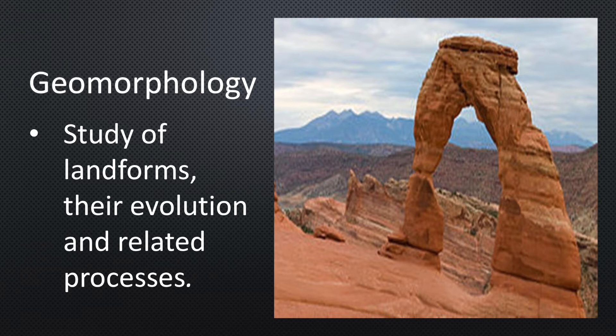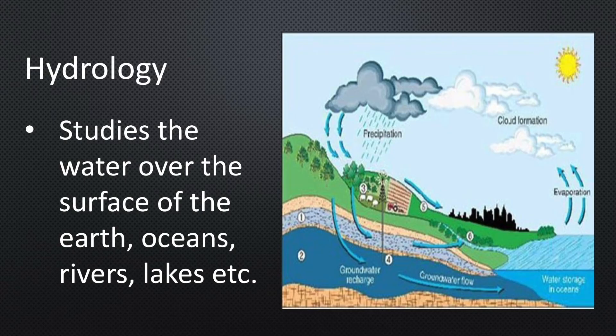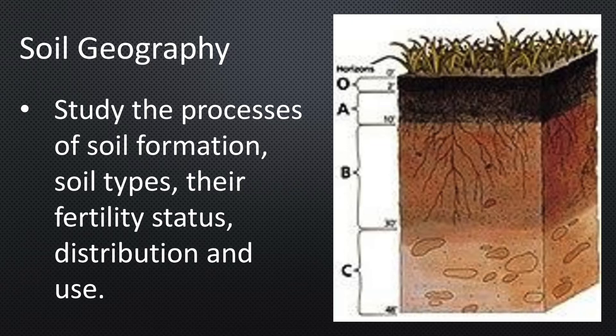Now let us see the fields of physical geography. Geomorphology: the study of landforms, their evolution and related processes. Climatology: study of climate, significantly defined as weather conditions averaged over a period of time. Hydrology: it studies the realm of water over the surface of the earth including oceans, lakes, rivers and other water bodies, and its effects on different life forms including human life and their activities. Soil geography: this studies the process of soil formation, soil type, their fertility status, distribution and use.